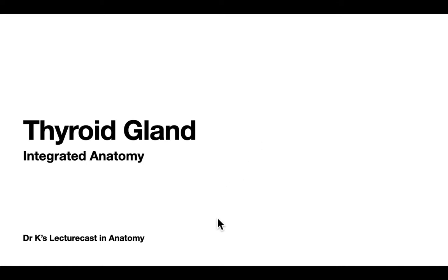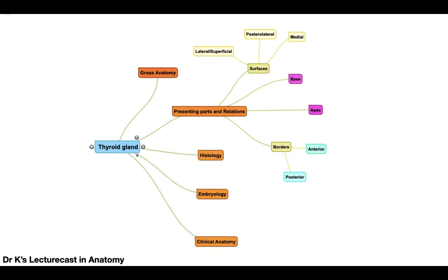Welcome to Dr. K's lecture cast in anatomy. Today we are going to cover a small topic about the thyroid gland. We are going to make it integrated by discussing various aspects of the thyroid gland: gross anatomy — the presenting parts and relations, divided into apex, base, surfaces, and borders — followed by histology, development, developmental anomalies, and clinical anatomy.